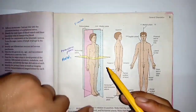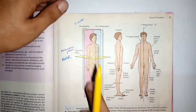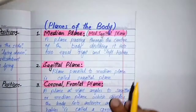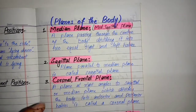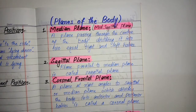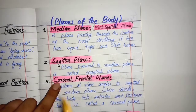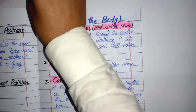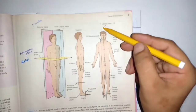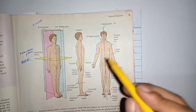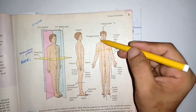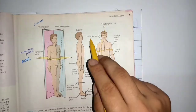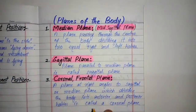You can also see here in this book — the blue plane is the one which divides the body into equal right and left parts, and that is called the median plane. The second plane we have is the sagittal plane. The sagittal plane also divides the body into right and left parts, but it does not divide the body into equal halves. It is a plane parallel to the median plane but does not divide the body into equal parts.